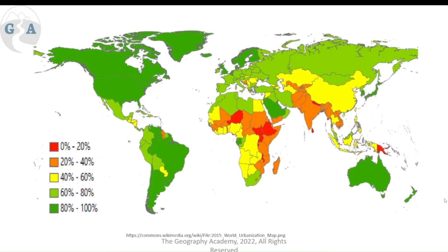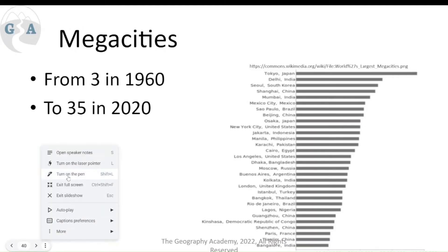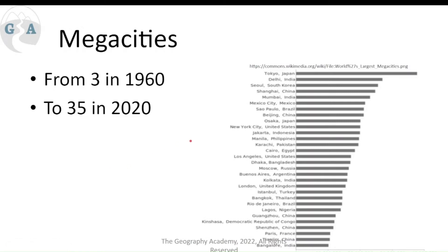When looking at the concept of mega cities — cities with a population of over 10 million people — we can see there are quite a few now, but there were only three in 1960. This shows the obvious trend towards growth of urbanization and major cities. Looking through them, we can start to see trends of particular countries seeing this more than others, including some that are below the 40 percent urbanization level.